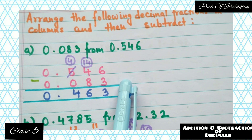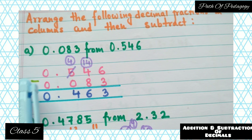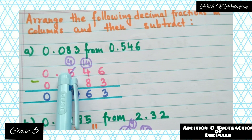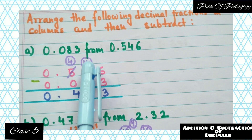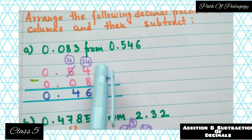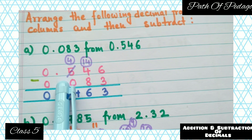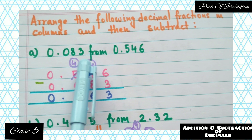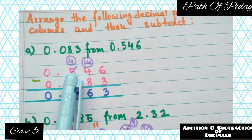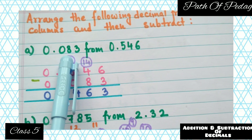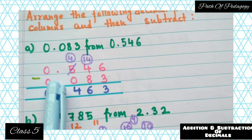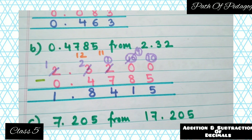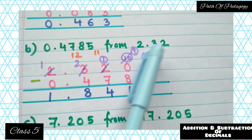Then write 0.083 below it. Now do the subtraction: 6−3=3; 4−8 — four is smaller than eight, so borrow one from the previous column to make it 14; 14−8=6. We borrowed from the 5, so 5 becomes 4; 4−0=4. Give the decimal point; 0−0=0. So the answer is 0.463.